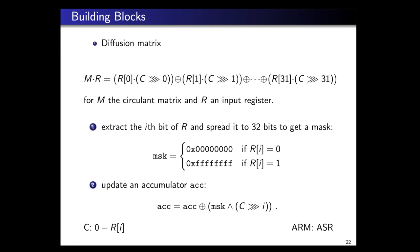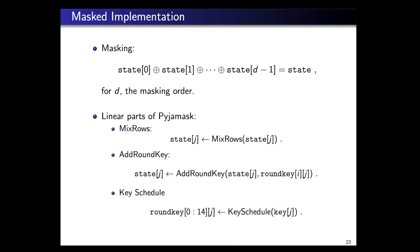That's for the unmasked version of Pyjamask. Now we'll look at how to apply masked implementation to Pyjamask, since the main goal is to have very efficient higher-order masking. For masking, you split your sensitive values into D values such that the sum equals the corresponding one. We split the state into D shares where D is the masking order, such that the XOR equals the initial state. The linear part is straightforward to implement. It's just applying each linear operation to the corresponding shares of the state. For mixed row, for the D shares, we apply mixed row on that particular share, same for add round key and key schedule. This only implies a linear overhead in cost for higher-order masking.